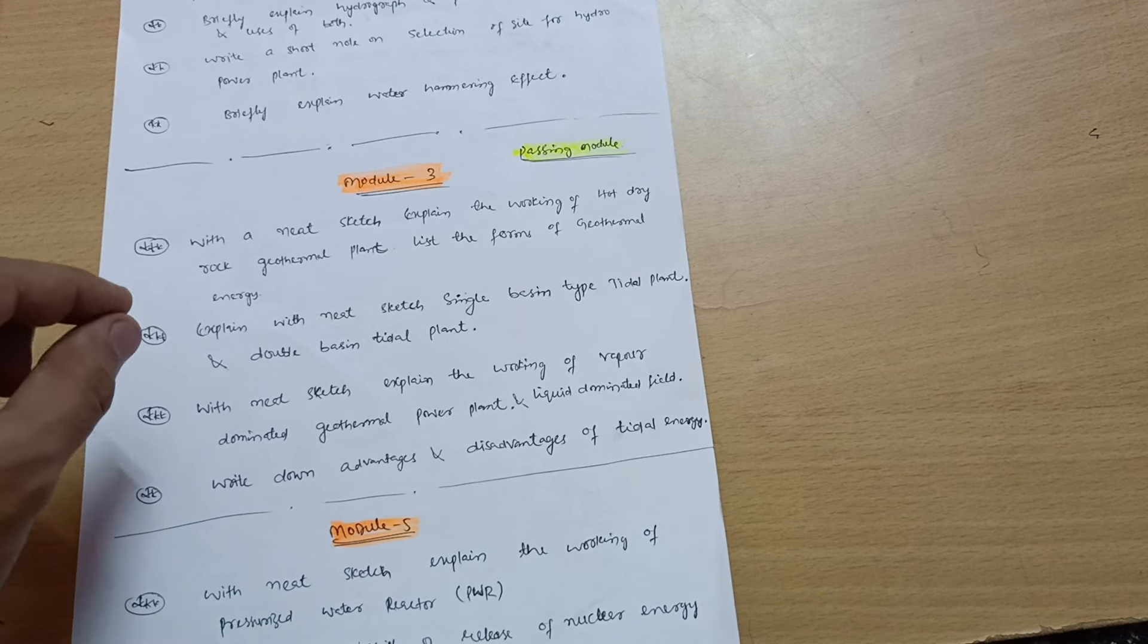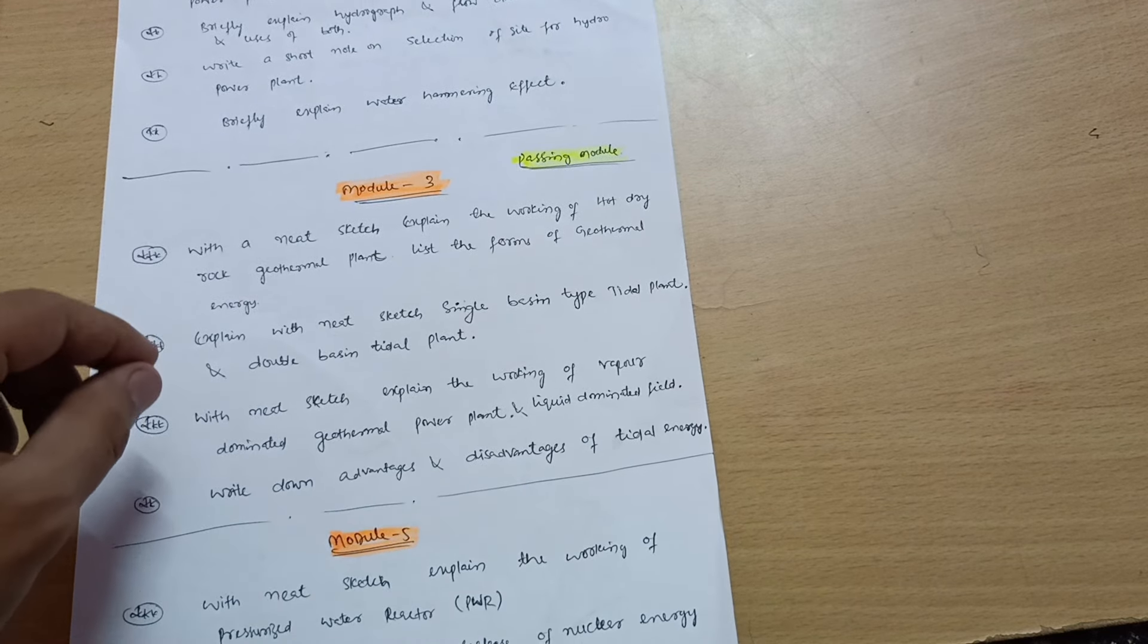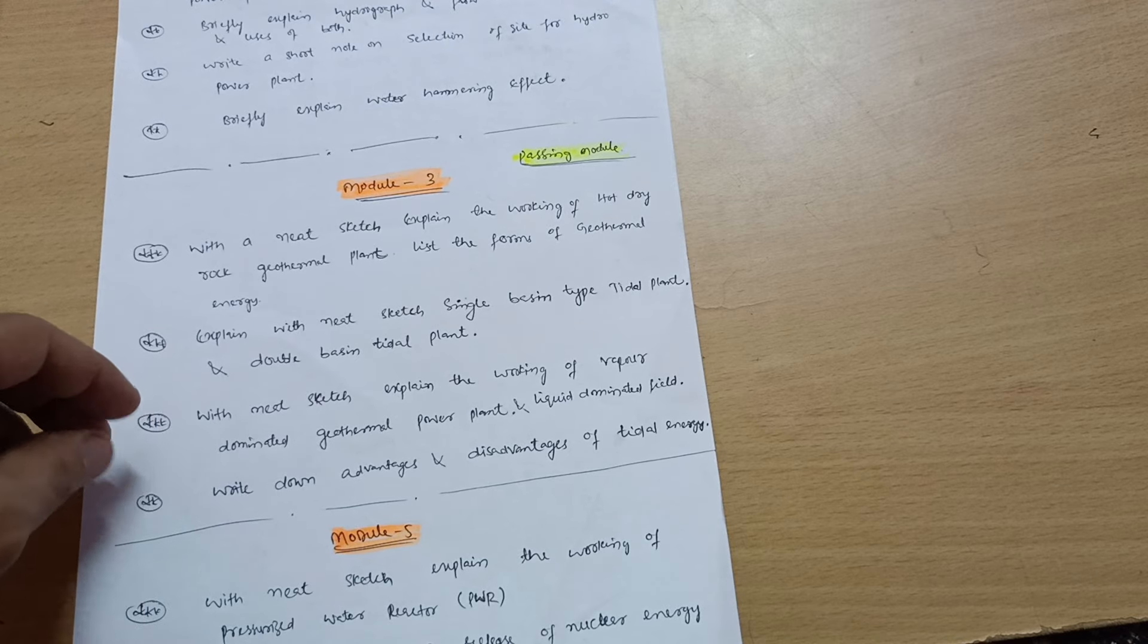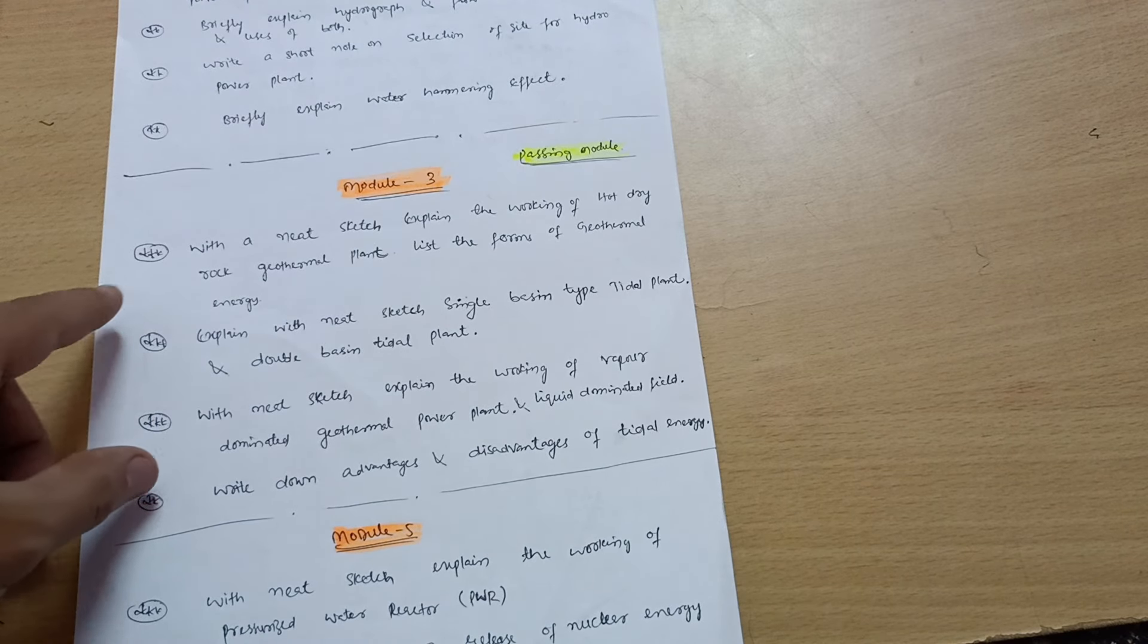This much is enough for Module 3 as it is the passing module. No need to go for the another chapter, that is Rankine cycle. That is vast syllabus. You can focus only on this much portion.